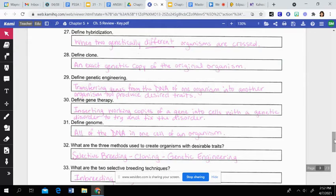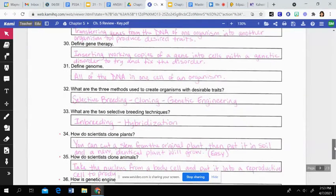A clone is defined as an exact genetic copy of their original organism. Genetic engineering is when you transfer genes from the DNA of one organism into another organism to produce desired traits. And then gene therapy is when we insert working copies of a gene into cells that have a genetic disorder to try and fix the disorder. The hope is that those working copies will start to produce the correct code and it will override that genetic disorder or clear it out, essentially. A genome then is all of the DNA in one cell of an organism. The three methods used to create organisms with desirable traits are selective breeding, cloning, and genetic engineering.